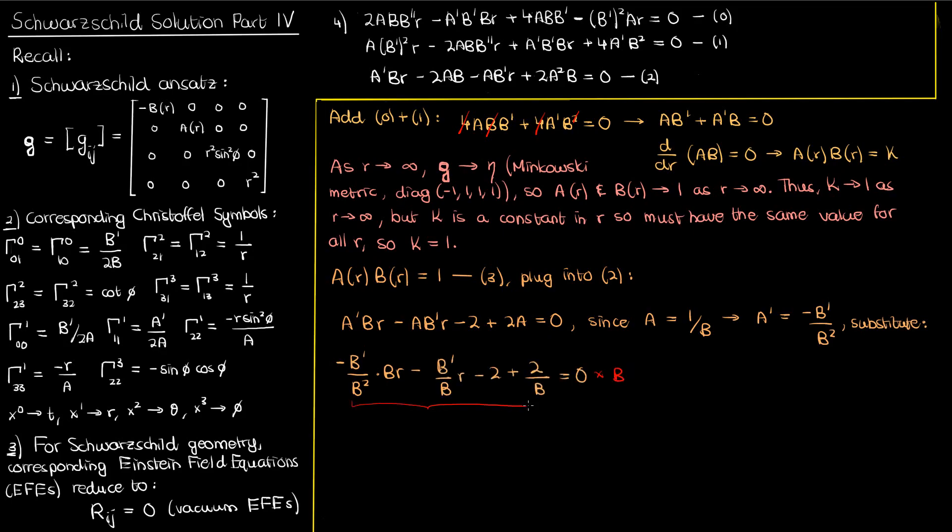We'll now multiply both sides by B to end up with the following. We can easily now combine like terms and isolate our B' or dB/dR. When we do that, we end up with this simple ordinary differential equation. We can now solve this ODE by separation of variables.